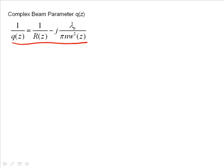And this can be at the waist of the beam or it can be at any point in space. We've given it in its more generic form as a function of z there.